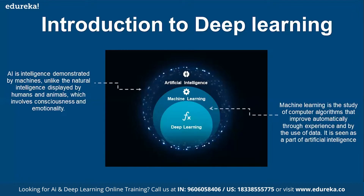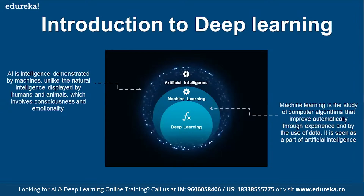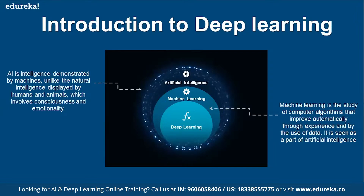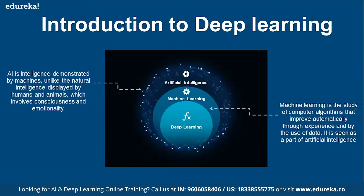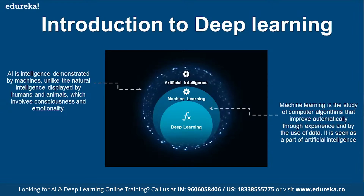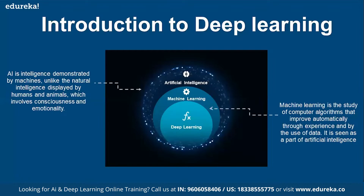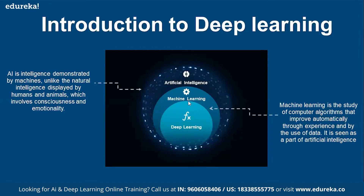Machine learning is a subset of artificial intelligence. It applies predefined computer algorithms to perform tasks in an automated manner — automatically, based on past experience. To gain that experience, we need to train our models with different historical data. That kind of concept we call machine learning.